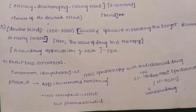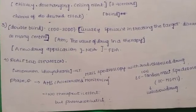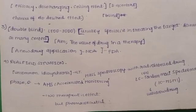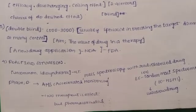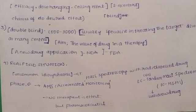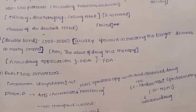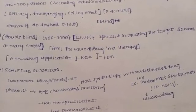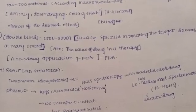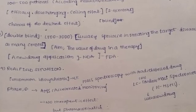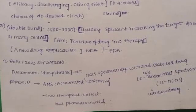Phase 2 involves blinding in the patient's body — the pharmacologist or clinical investigator is blinded, making it double blind. The study involves around 500 people and usually specialists in treating the target diseases. For example, for a renal patient with a kidney problem, a specific drug targeting that specific site is studied at many centers.